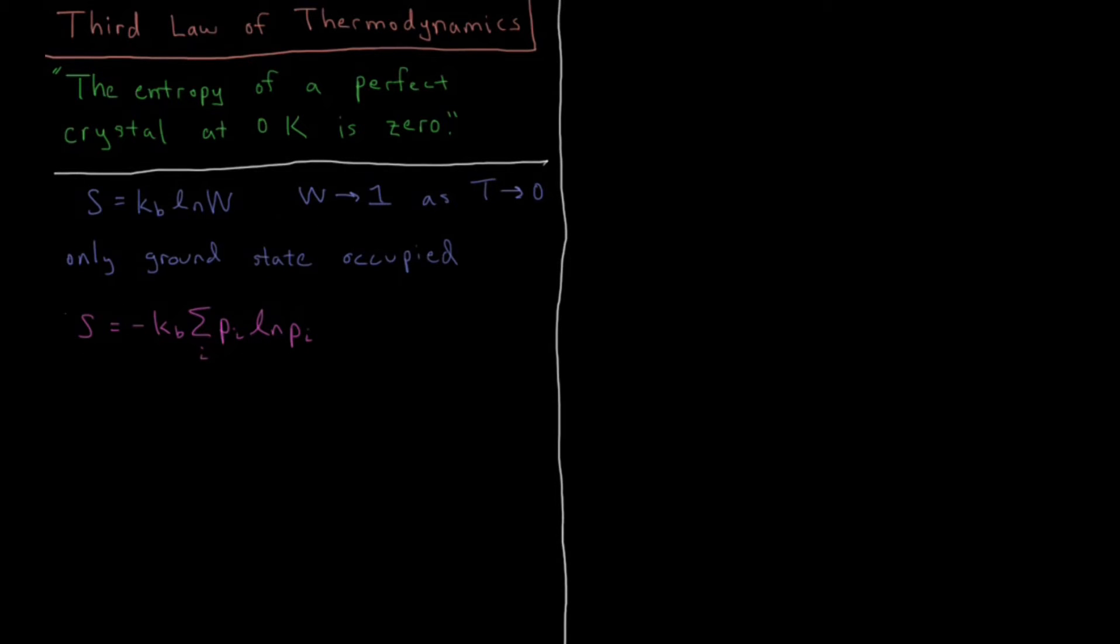So in order for this to be zero, what we have to have is that the probability of state one is one and the probability of everything which is not state one is zero. So the system is entirely located in the ground state in one state, so there is zero uncertainty about where it is.